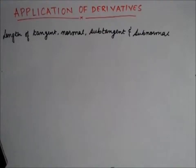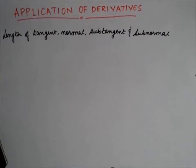Till now, we have studied how to find the slope of tangent and normal, the equation of tangents and normals, and we also saw how to find the angle of intersection of two curves. The next topic is to see how to find the length of tangent, normal, subtangent, and subnormal.